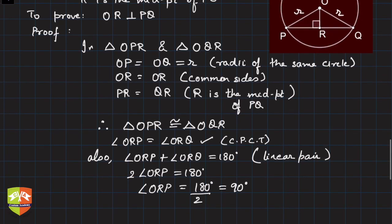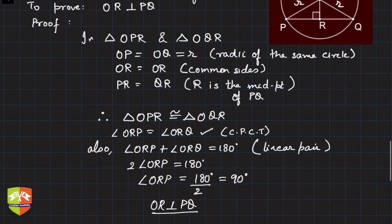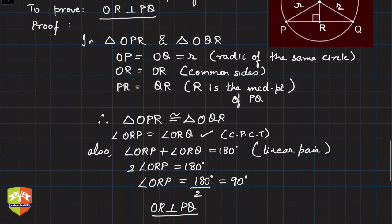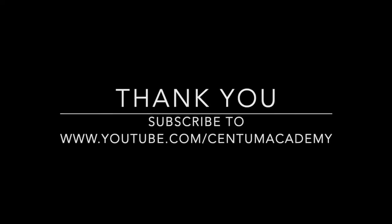Right, so the moment we got ORP as 90 degrees, we can say OR is perpendicular to PQ. This is what we needed to prove. Since angle ORP is 90 degrees, OR is perpendicular to PR, and PR is a part of PQ, so OR is perpendicular to PQ. Hence proved.